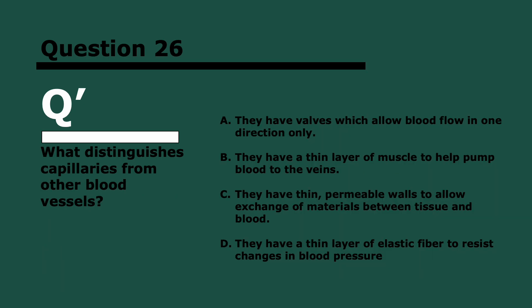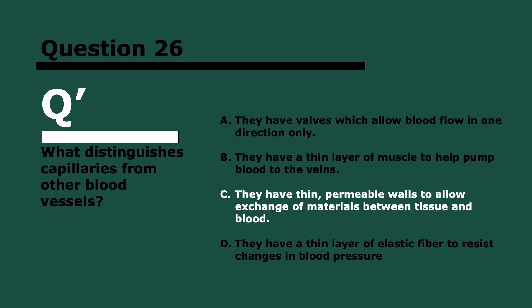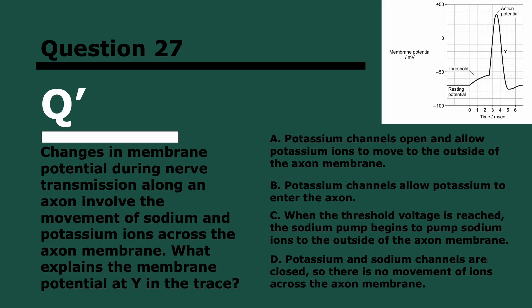Question 26. What distinguishes capillaries from other blood vessels? Three, two, and one. They're thin and they have permeable walls. Remember, they have to allow exchange of materials between tissue and blood. They don't have valves, that's veins. They don't have a thin layer of muscle at all, they're too thin. And they don't have a thin layer of elastic fiber, they're too thin to have those things.